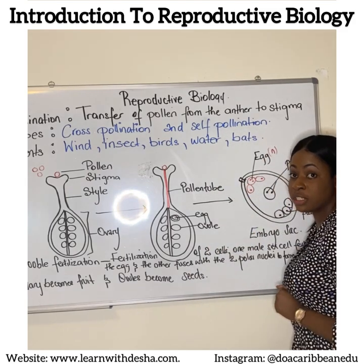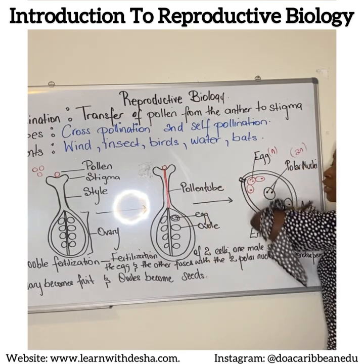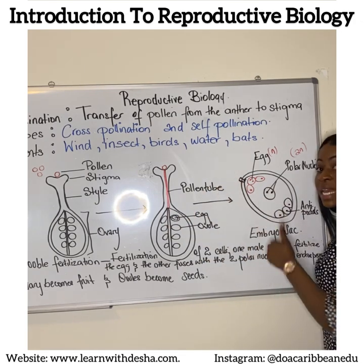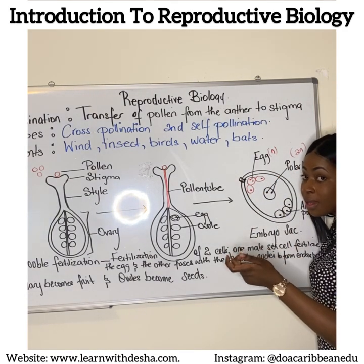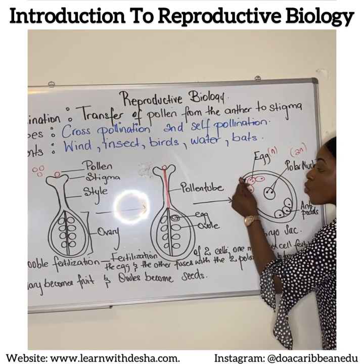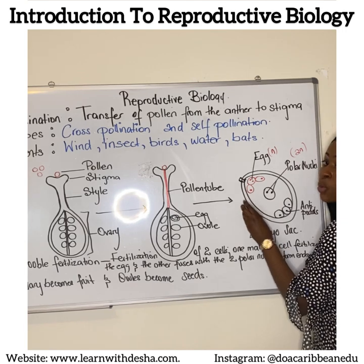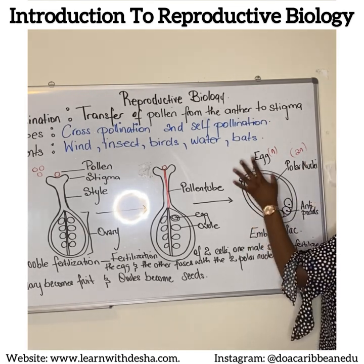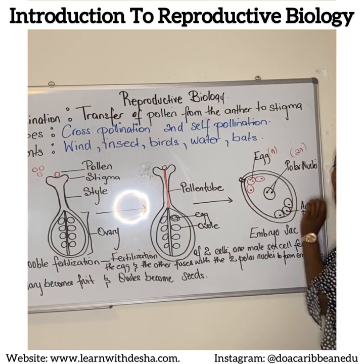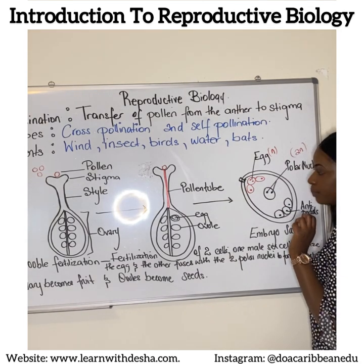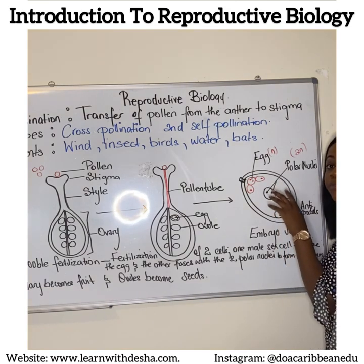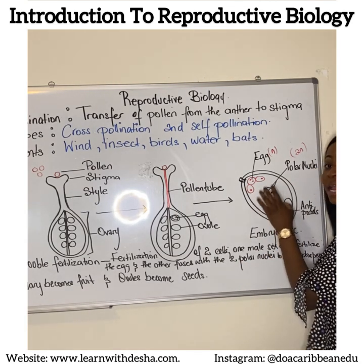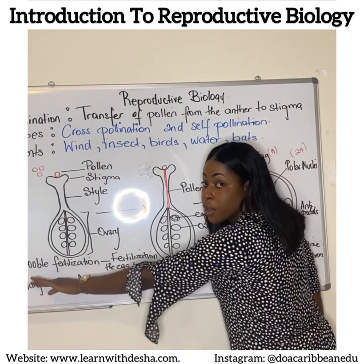CAPE Biology students, pay attention. The ovule is enlarged here. When the pollen tube grows down to the ovary, the pollen grain — which contains two cells, a pollen tube cell and a generative cell — enters through the micropyle. One of those cells, which is haploid, fuses with the egg, which is also haploid, to form a zygote. The second pollen cell fuses with the polar nuclei, which is diploid, to form a triploid endosperm. The endosperm later provides nourishment for the developing embryo. We call this process double fertilization.